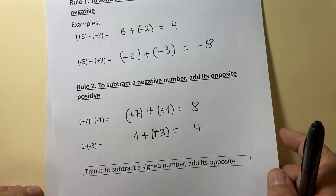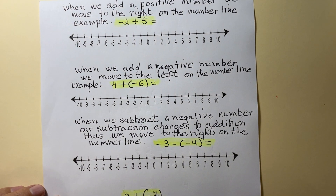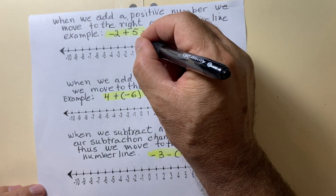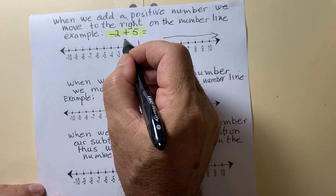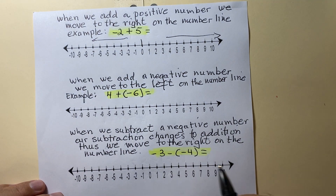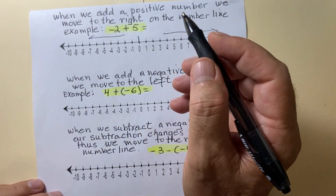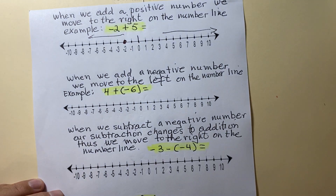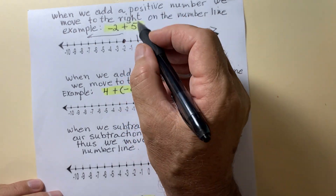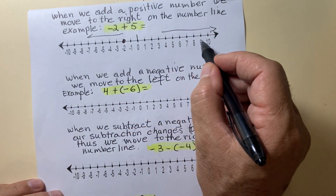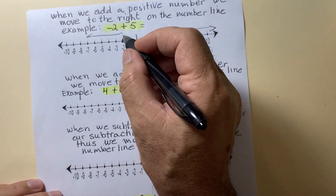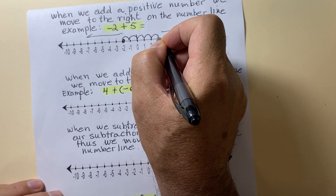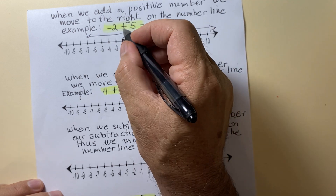Another strategy to add and subtract signed numbers is using the number line. When we add a positive number, we move to the right on the number line. On the right you have positive numbers, on the left you have negative numbers. For example, start with negative 2 — plot negative 2 on the number line. When you add, move to the right. Move 5 units to the right: 1, 2, 3, 4, 5. Stop and read the number — negative 2 plus 5 equals 3.